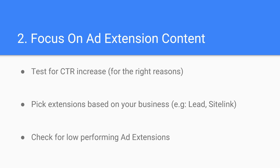Next up, focus on ad extension content. Ad extensions are something that can easily be forgotten when setting up new campaigns and ad groups. They can seem tedious or unimportant, but the contrary is actually true. Ad extensions are a vital part of increasing your ad rank on Google — they help increase your CTR, and in turn help you increase your ad rank. Ad extensions allow you to give users additional information about your business that you couldn't convey in your limited characters in your ad. But don't just add extensions for the sake of adding them — if you add extensions that don't align with the search terms, this could actually lower your ad rank.